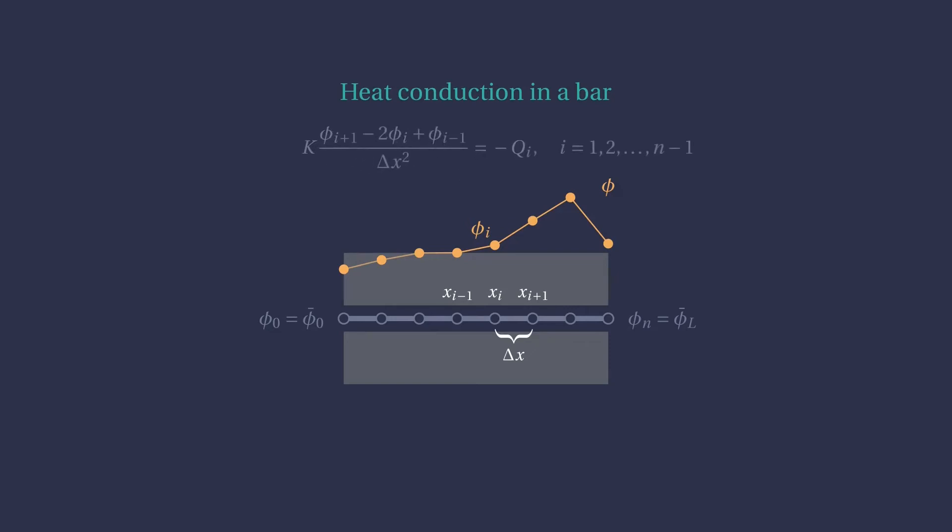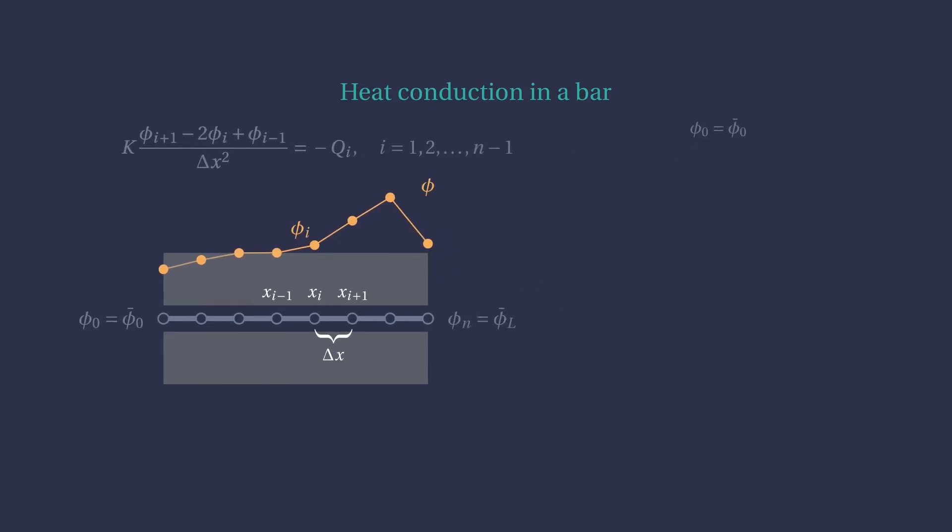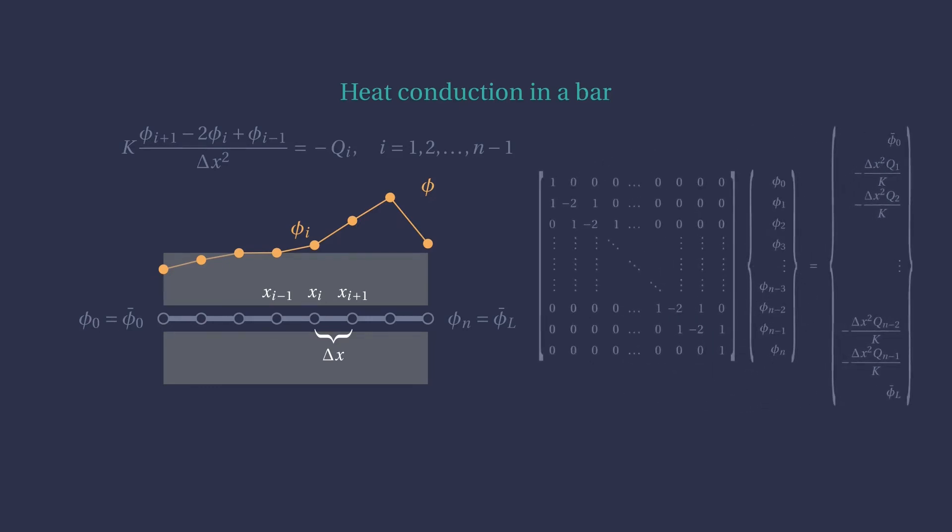That said, applying our formula at each point of the grid, not on the boundary, we find a linear equation in the values of phi at the grid points. For the nodes at the boundary, we already have two equations. So we have found n equations and we have n unknowns. Now, we just need to solve the system of equations to find the temperature of the rod at the different grid points.